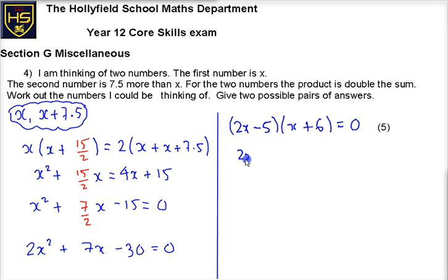So I know 2x minus 5 is 0, or I know that x plus 6 is equal to 0. So I know that 2x is equal to 5, or x is equal to 5 over 2. You could say 2.5, but I like it in fraction form. Or, x is equal to minus 6.